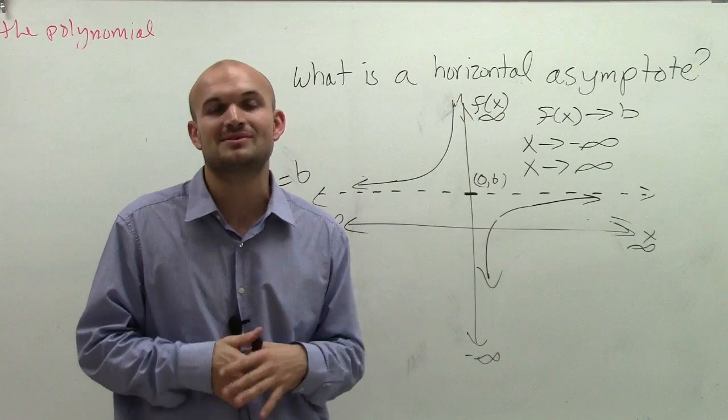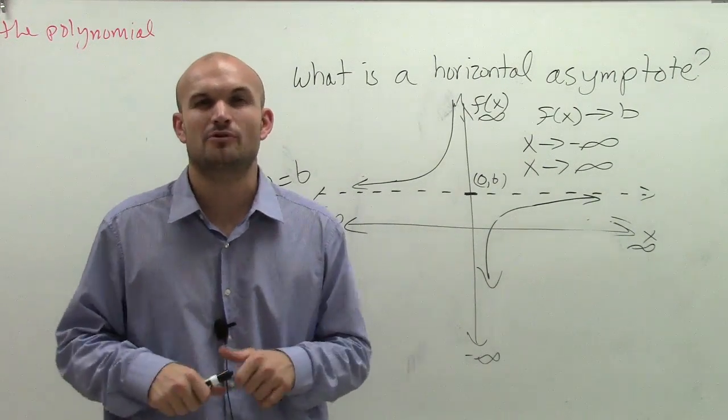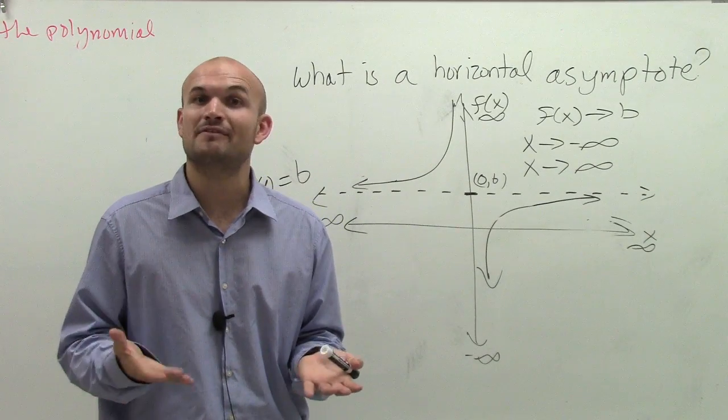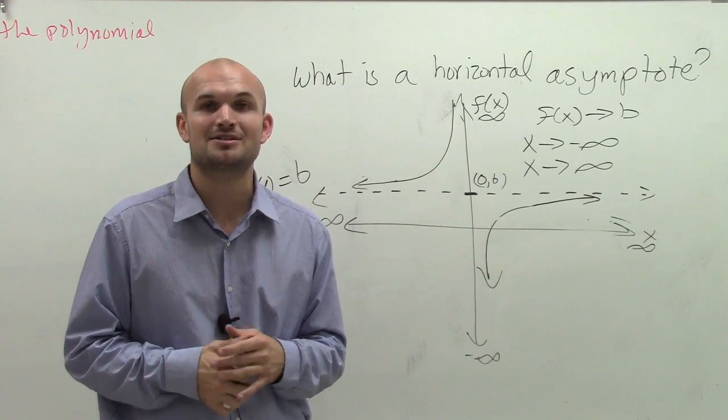So that is the definition of a horizontal asymptote. I hope that helped you out. We'll go through examples of how to find them and what they really mean in a bit. If you have any questions, make sure you comment or ask below. Thanks.